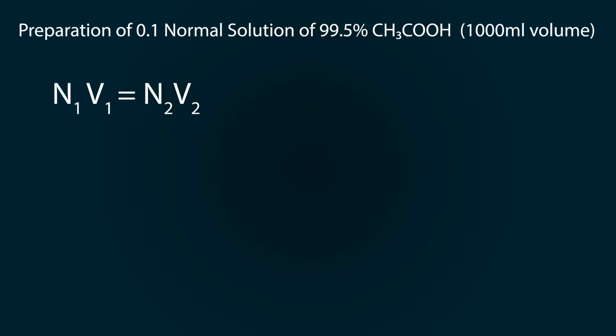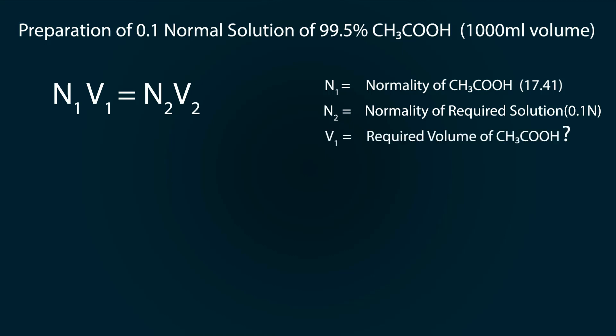N₂ equals the normality of our required solution, which is 0.1 normal. V₁ is the volume of acetic acid, and V₂ is the final solution volume, which is 1000 milliliters.